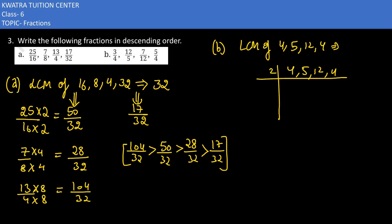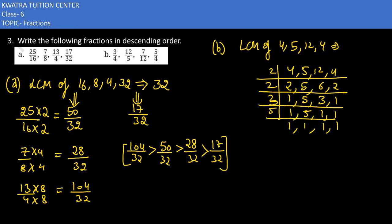4 लिखा, 5 लिखा, 12 लिखा, 4 लिखा. 2 से जाएंगे हमारे numbers. 2 गए: 2, 2, 6, 2. फिर 2 गए: 1, 1, 3, 1. 3 से: 1, 1, 1, 1. 5 से: 1, 5, 1, 1. So the LCM is 2 × 2 × 3 × 5, which is 60.